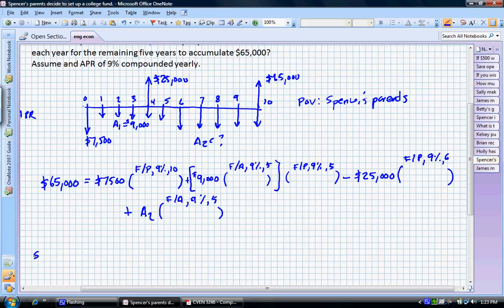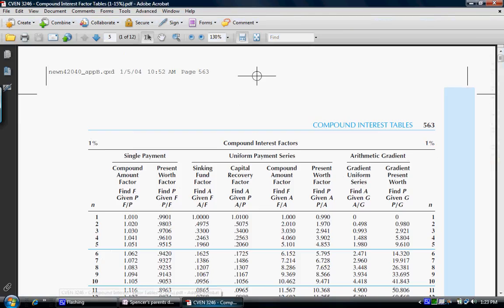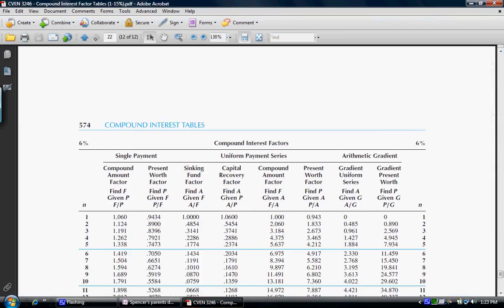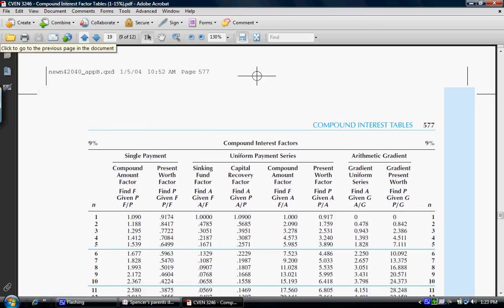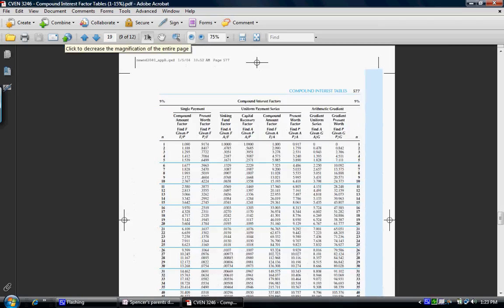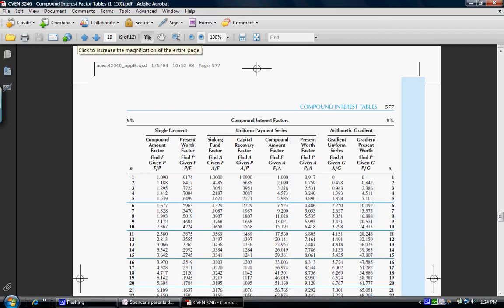So let's add in the factors here. We have $65,000. Our initial investment of $7,500. We need to go to our interest tables. We need to go to the 9% table and find the F/P factor for 10 years. So let's go down to the 9% table. There it is. We need to go down 10 years and what we need is the F/P factor in 10 years. That's 2.367. Let's write that in. 2.367.